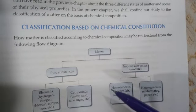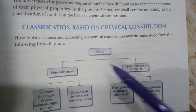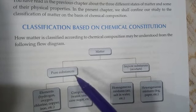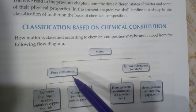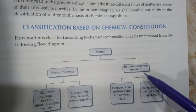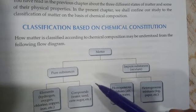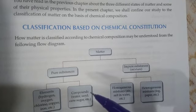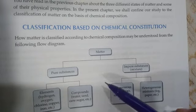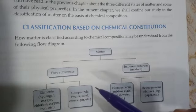Matter may be either pure or impure substances. Pure substances contain molecules of the same type, while impure substances contain molecules of different types. You should know what an atom is and what a molecule is. The smallest particle of a substance that may or may not exist independently is called an atom. When one or two atoms combine together chemically, it is called a molecule.